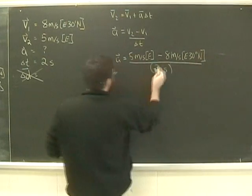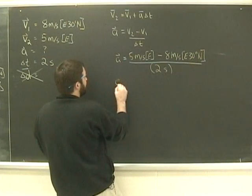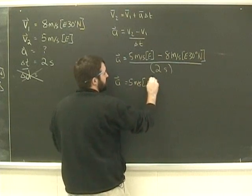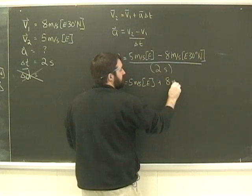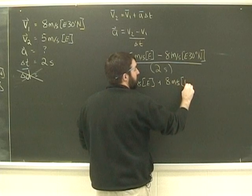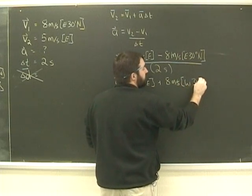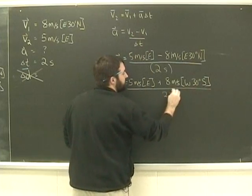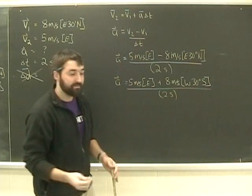So what do we do? We want to get rid of that minus sign, so acceleration will be 5 meters per second east plus 8 meters per second west 30 degrees south, and all that will be divided by 2 seconds. That's really the last step though.